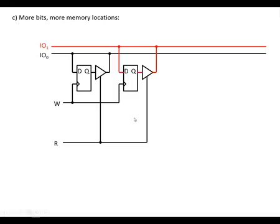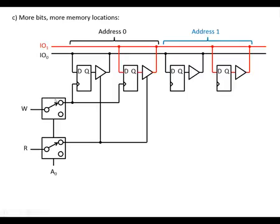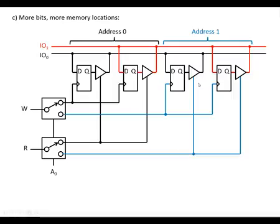And if you wanted to get the second memory location, what we've got to do is we've got to split the W and the R signals. So we've got address 0 here. To get address 1, what we need is to use a multiplexer to split the write signal, so we can send it to address 0 or we can send it to address 1, and the read signal to address 0 or to address 1.